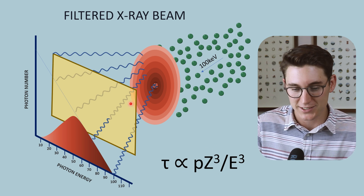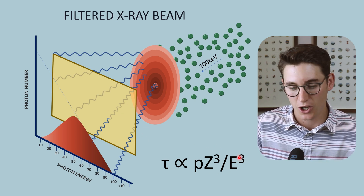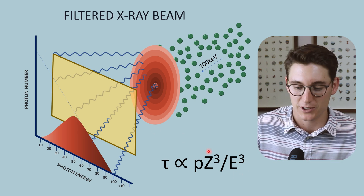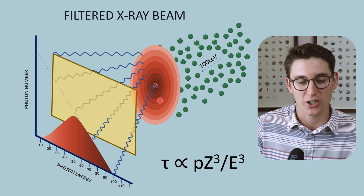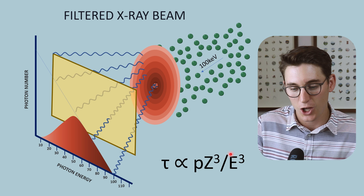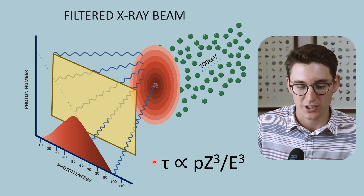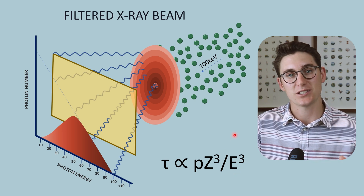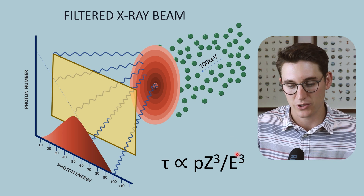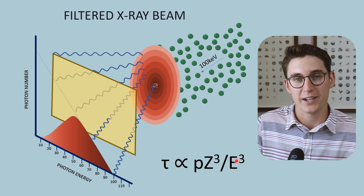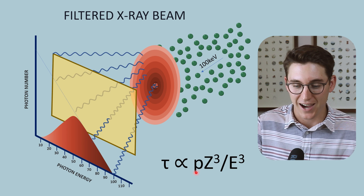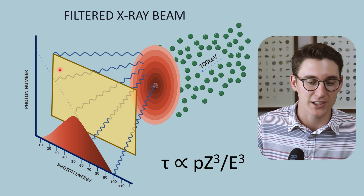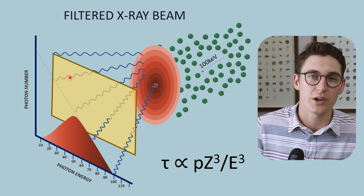For set filters, density and atomic number remain constant. What changes is the energy of the x-ray photon interacting with that filter. If we increase the x-ray photon energy, we decrease the likelihood of the photoelectric effect, because energy appears in the denominator — as energy increases, the denominator increases and likelihood decreases. So our low energy x-rays give a low denominator and a higher likelihood of the photoelectric effect, which is why filters preferentially remove lower energy x-rays.